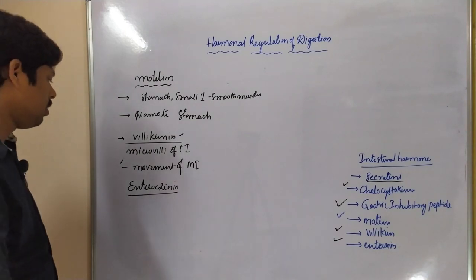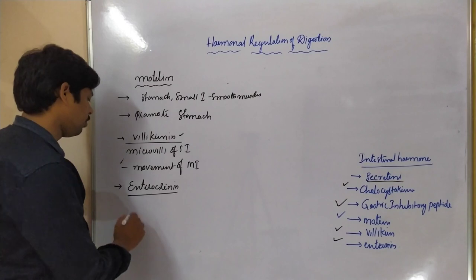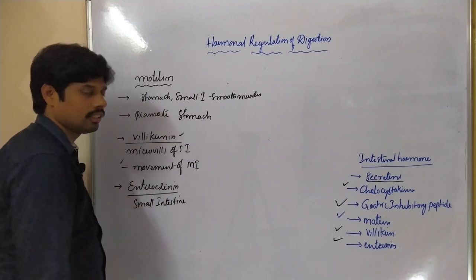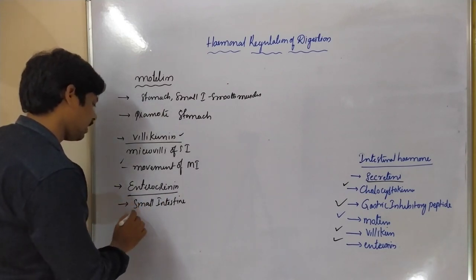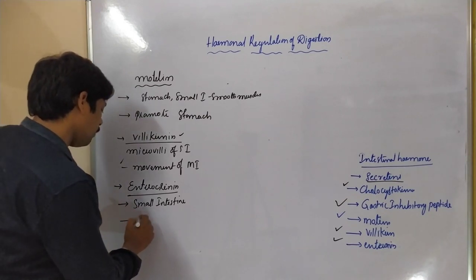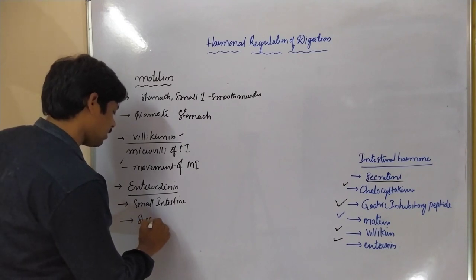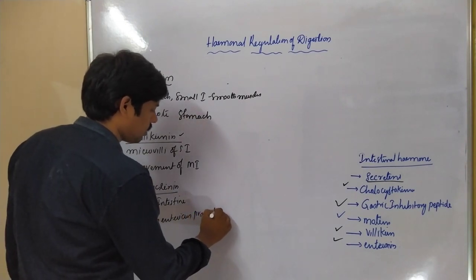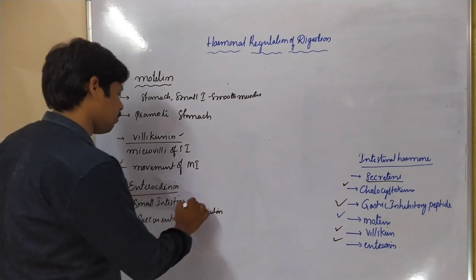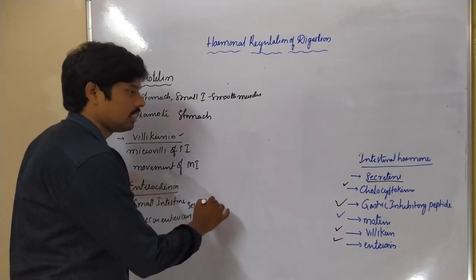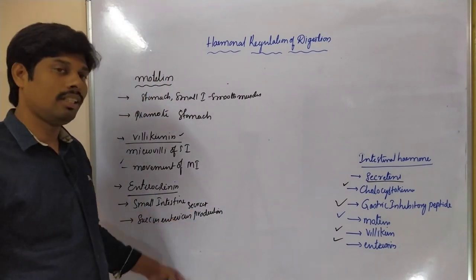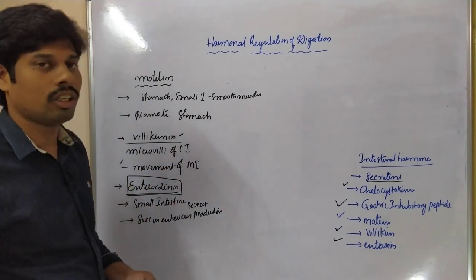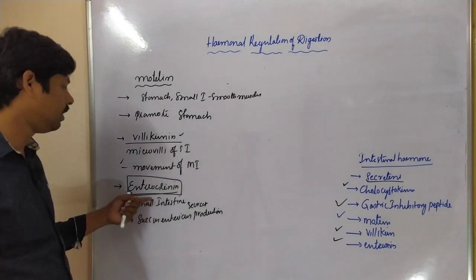The final hormone is enterocrinine. Enterocrinine is also produced by the small intestinal cells. It is essential for succus entericus secretion — the secretions produced by the succus entericus are influenced by enterocrinine. This is the main function of enterocrinine.